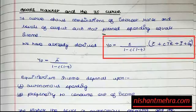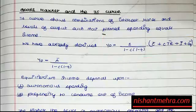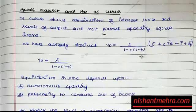You can also write c-bar plus c times tr-bar plus i-bar plus g-bar simply as a-bar — an autonomous spending term. All of this is autonomous.